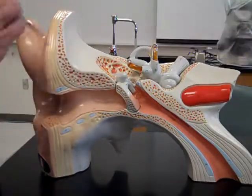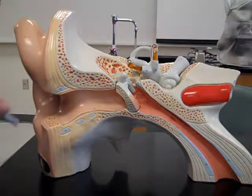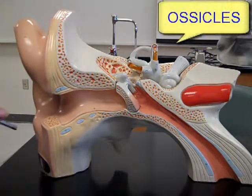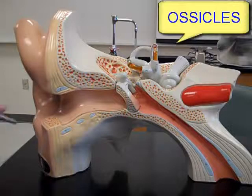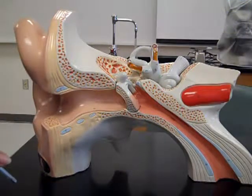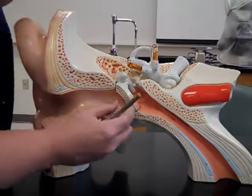Within the middle ear, we have a series of bones. There are three bones, and when we talk about all three together, we call them the ossicles. 'Oss' means bone. But when we think about them individually, they're the malleus, the incus, and the stapes — those three bones in order.